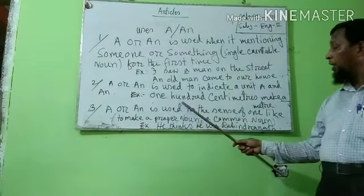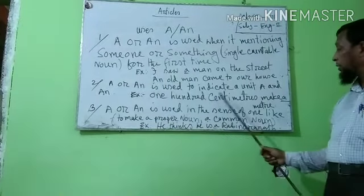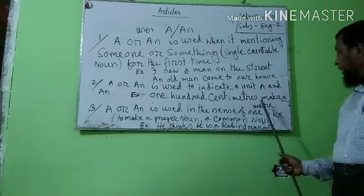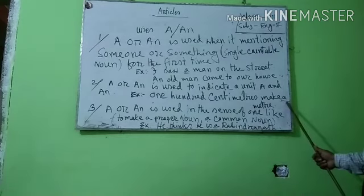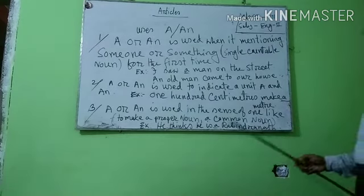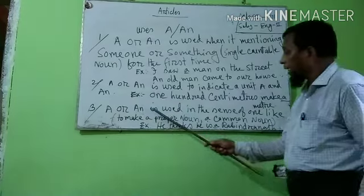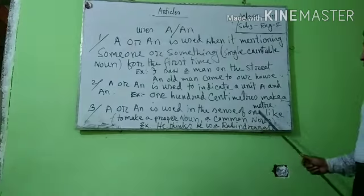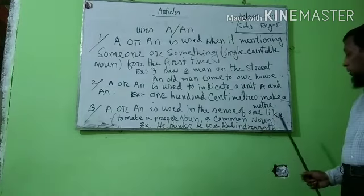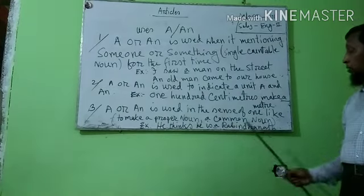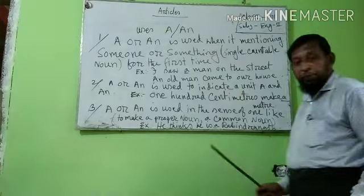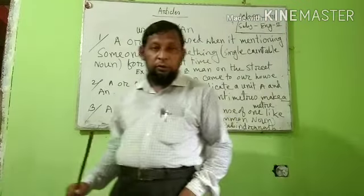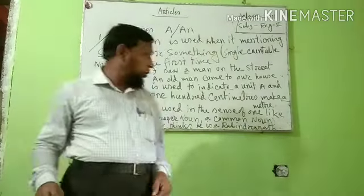Number two: A or AN is used to indicate a unit. Example: One hundred centimeters make a meter. Number three: A or AN is used in the sense of 'one' to make a proper noun a common name. Example: He thinks he is always right. You are a Napoleon.